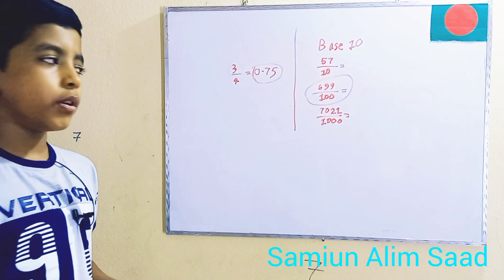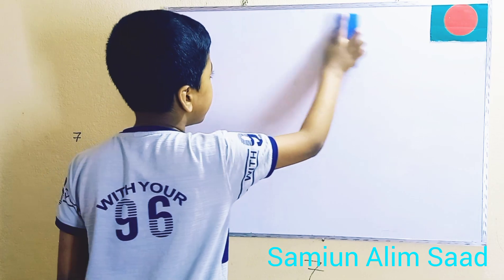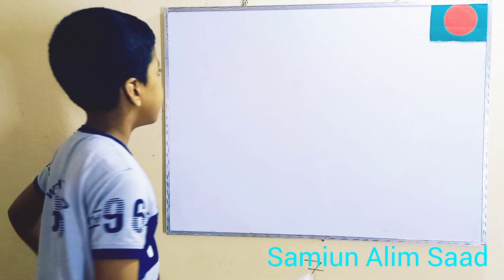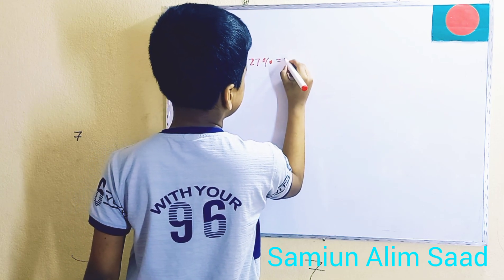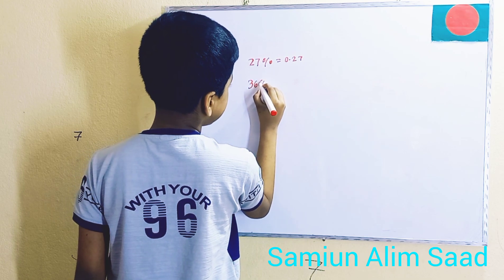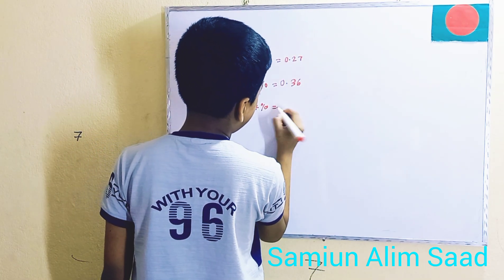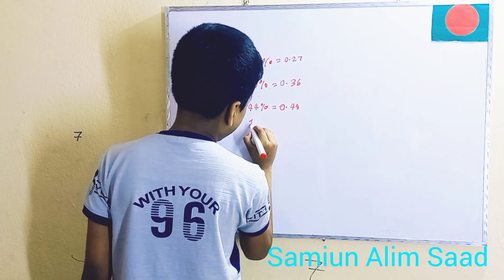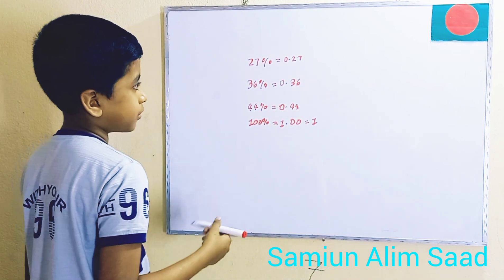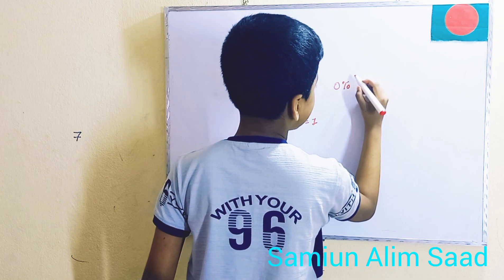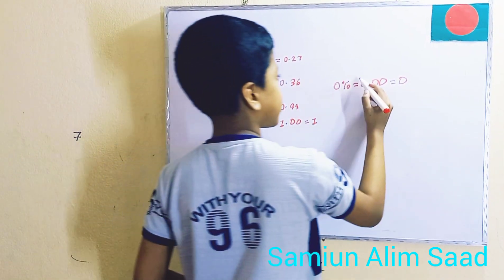Let's do that. We have some examples. 27% is 0.27. 36% is 0.36. 44% is 0.44. And 100% — our classic — is 1.00, or 1. What about 0%? Well, 0% is just 0.00, or 0. We need that extra decimal place there.